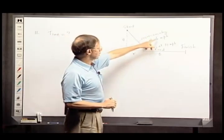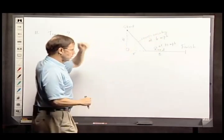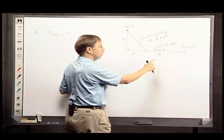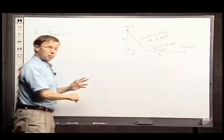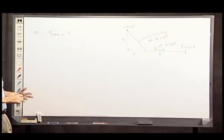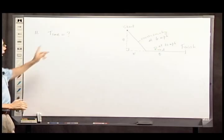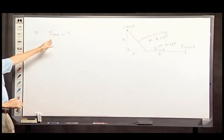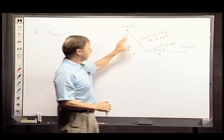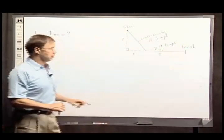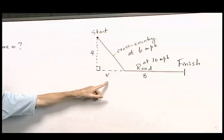Cross-country, the person can make 6 miles per hour. On the road, the person can make 10 miles per hour. So it's sort of an incentive to get to the road. But what I'm trying to do now is express the time that this person takes to get from the start to the finish as a function of this dimension X.